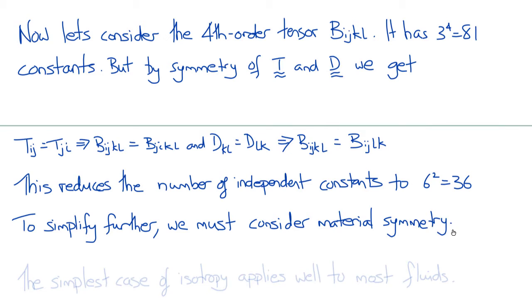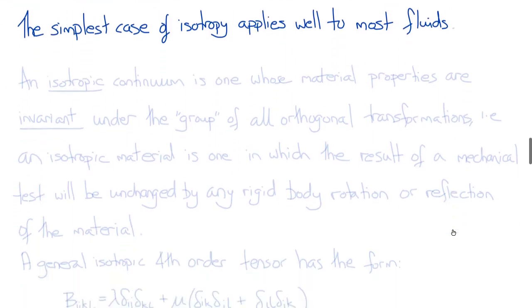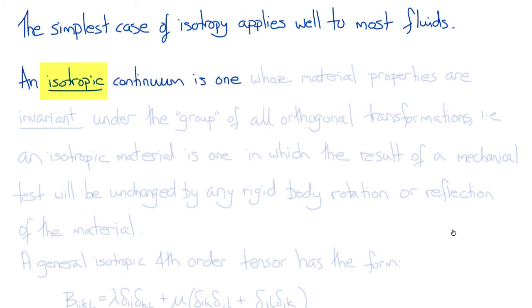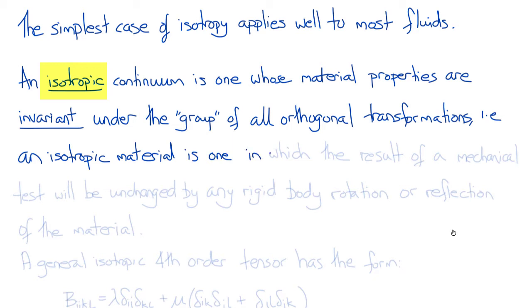To simplify B_ijkl further, we must consider material symmetry. Material symmetry describes the properties of the material as a function of orientation. The simplest case is isotropy, which applies essentially to all fluids except very unusual fluids like liquid crystals. An isotropic continuum is one whose material properties are invariant under the group of all orthogonal transformations — meaning the result of a mechanical test would be unchanged by any rigid body rotation or reflection. Put more simply, the properties don't depend on which direction you test the material.